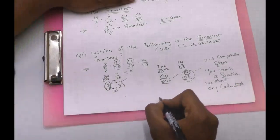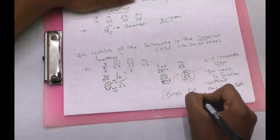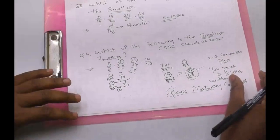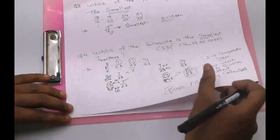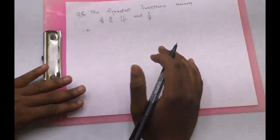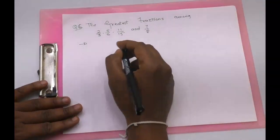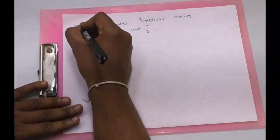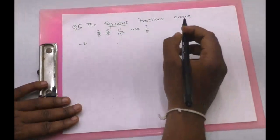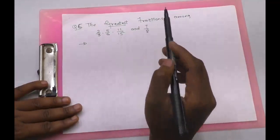This is the best part about knowing the basics of maths — when you know the basics, solving the sums becomes much easier. Now we will move to the final type of question, wherein we will try to use all the techniques we have learned. We have to find the greatest fraction among: 2 by 3, 5 by 6, 11 by 15, and 7 by 8.